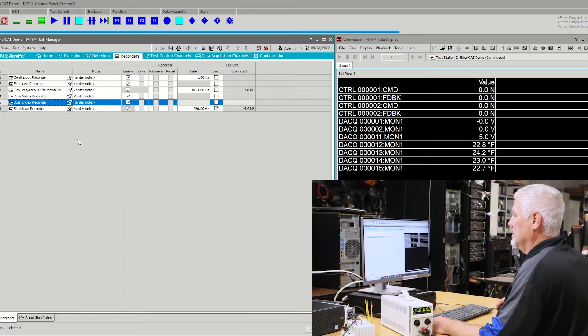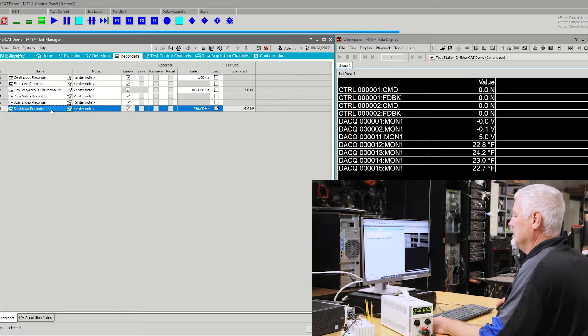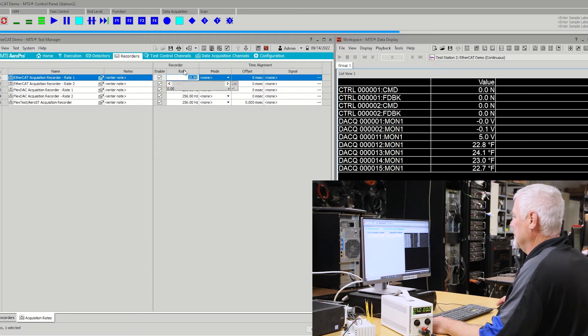The EtherCAT data is combined in the Aeropro shutdown recorder just like any other DAC platform. To set the acquisition rate, go to the acquisitions rates tab and adjust the rate.